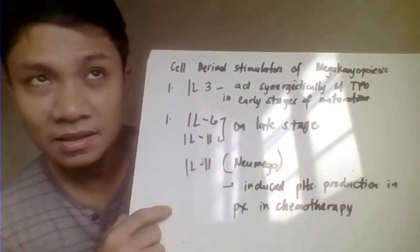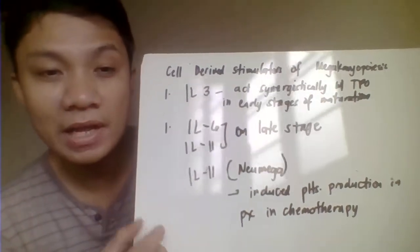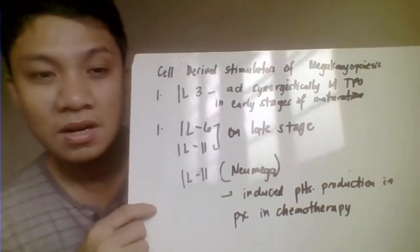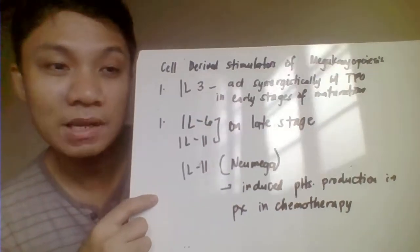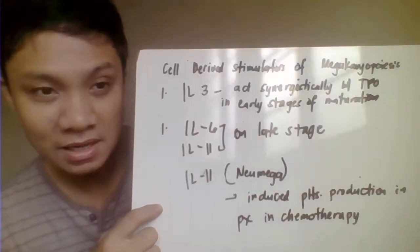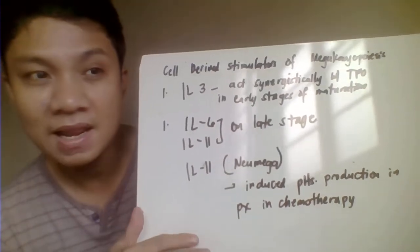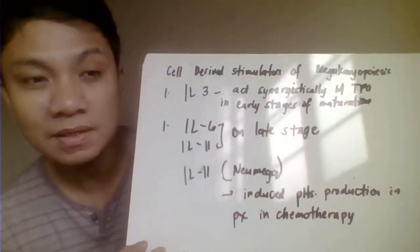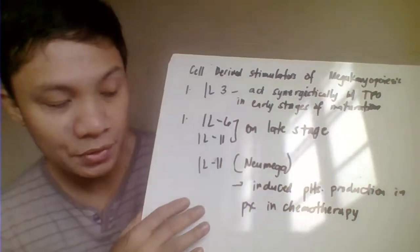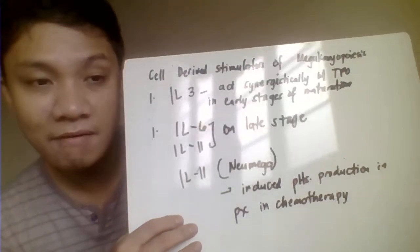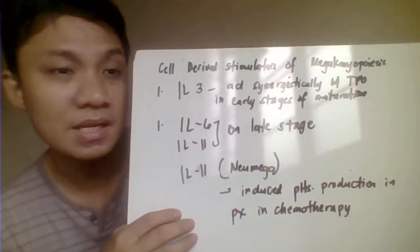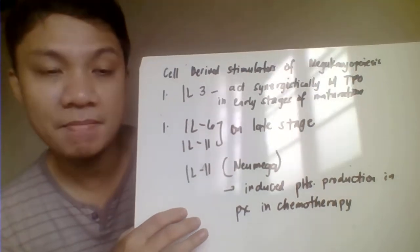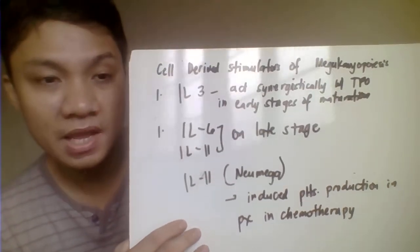Remember, if the patient is undergoing chemotherapy, the chemotherapeutic procedure tends to destroy all the blood cells in our body — not only your cancer cells, but also your normal cells including your blood cells. So interleukin 11 could help increase platelet production for those affected by the chemotherapeutic agents.